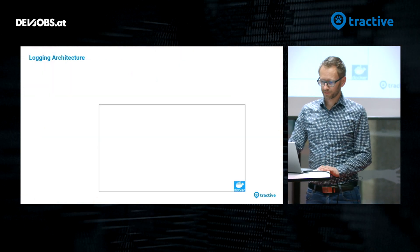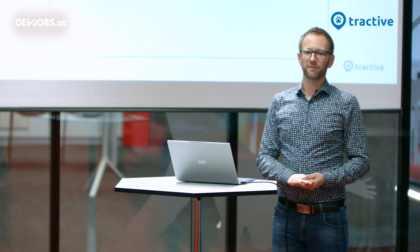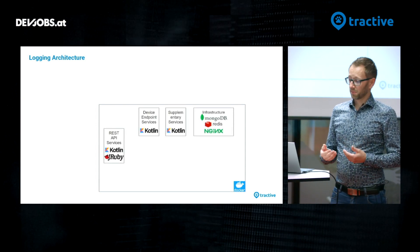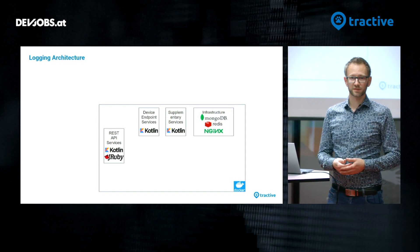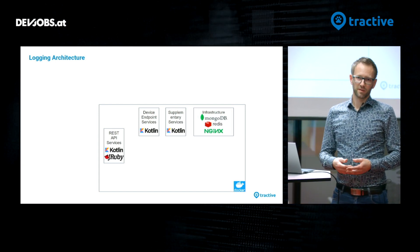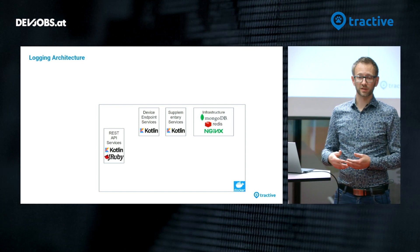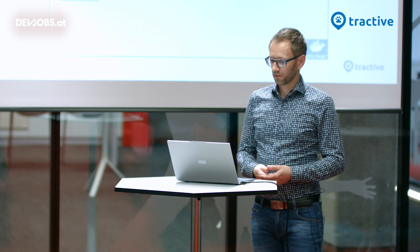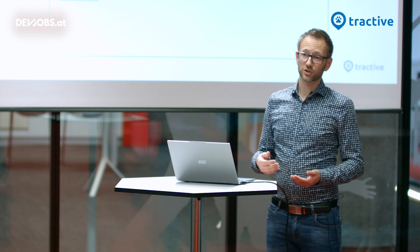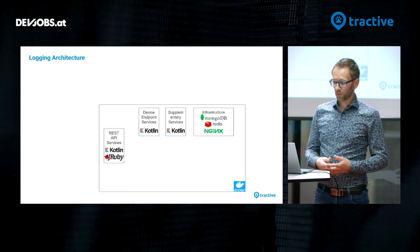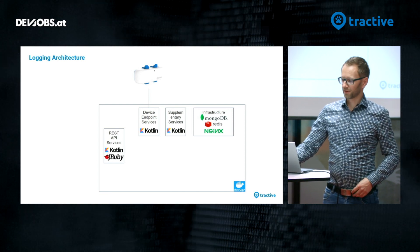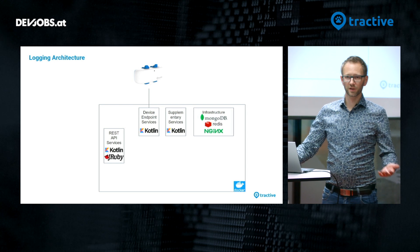So how did we solve this challenge? Let me explain what runs in the background. Our Tractive ecosystem runs on a Docker Swarm environment in a larger cluster of several servers. There are various applications like REST APIs, endpoints for our GPS trackers that consume IoT device data, and supplementary services such as a notification service for push notifications, geo-location related applications, and many more. In addition, there is infrastructure running — load balancers, caches, and MongoDB as our core database. All of those systems generate logs, and the GPS trackers in the field also produce logs and send them to our device endpoints.